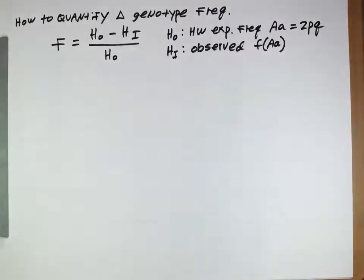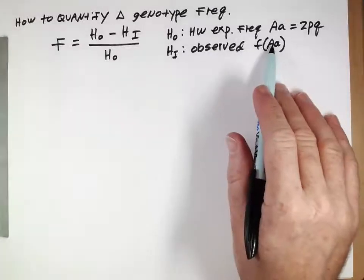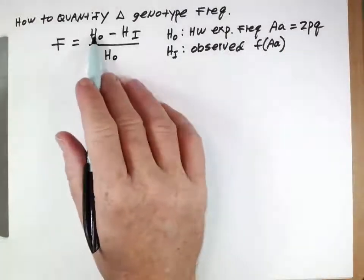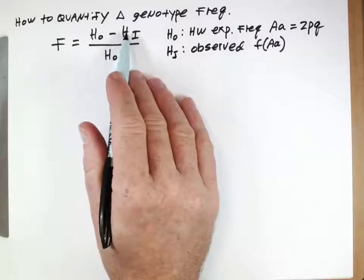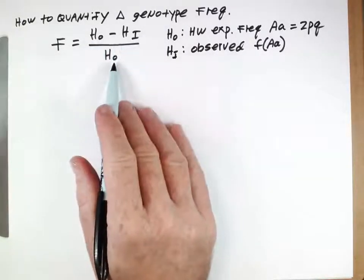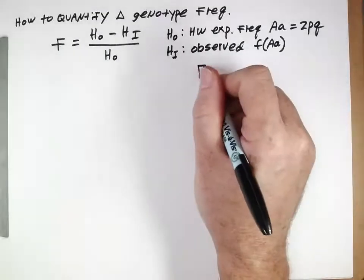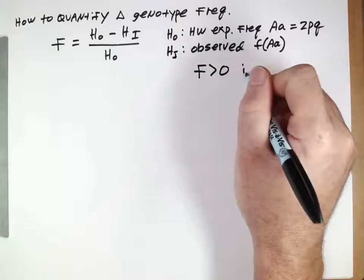With inbreeding, this strict inbreeding we just looked at, this was much smaller than this. That would give you this 2pq. This is a smaller value. You get a positive value in the numerator. This value here is also a positive value. So you would get a positive value if you had inbreeding.